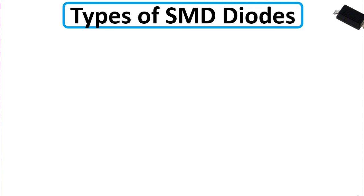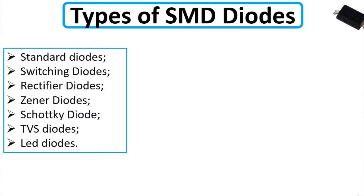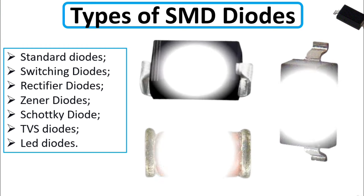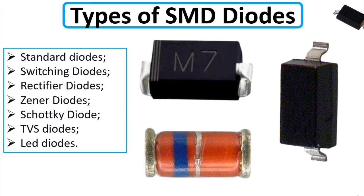So the types of SMD diodes: we're going to see many types. We have standard diodes, switching diodes, rectifier diodes, Zener diodes, Schottky diodes, TVS diodes, and LED diodes or light emitting diodes.